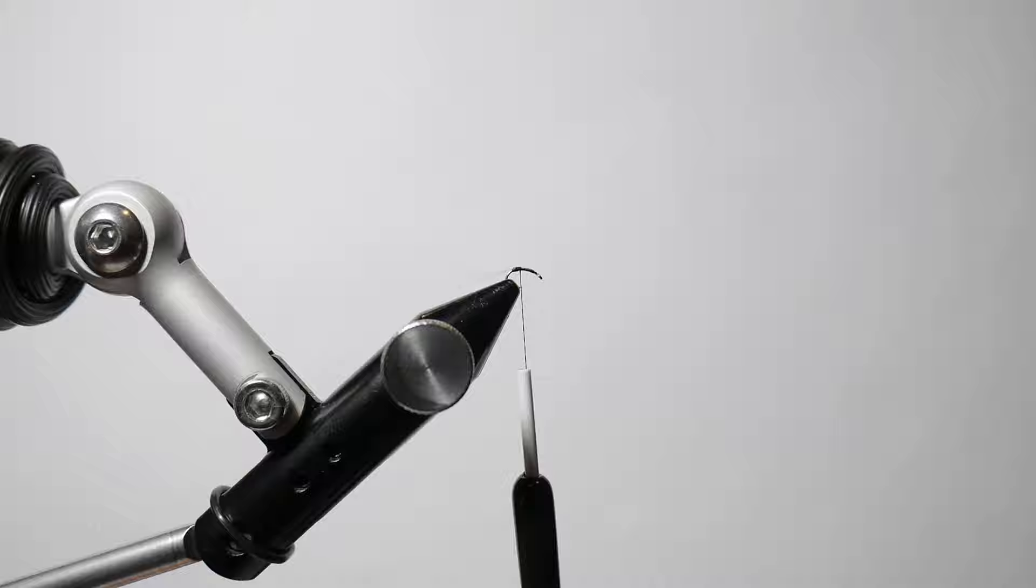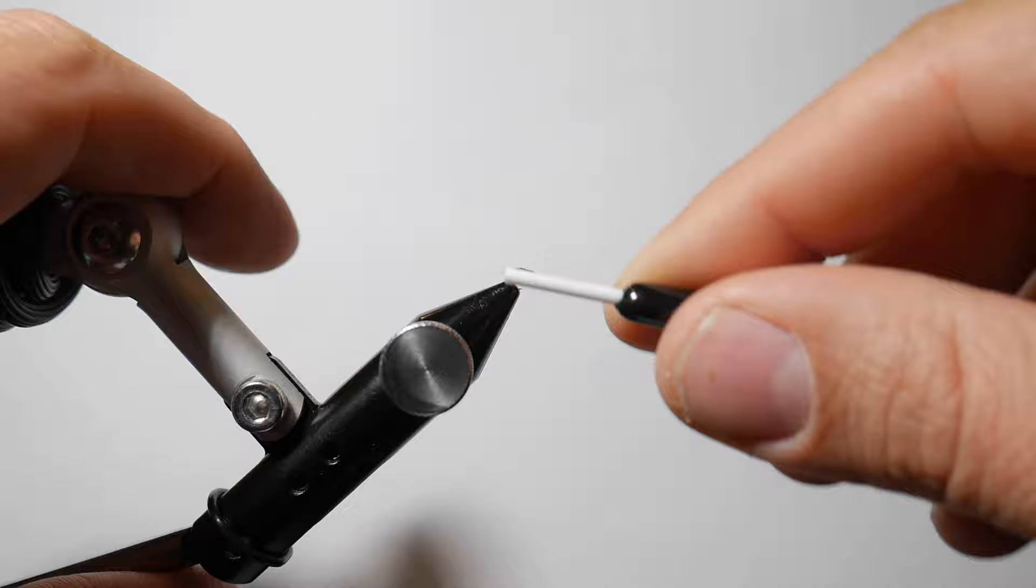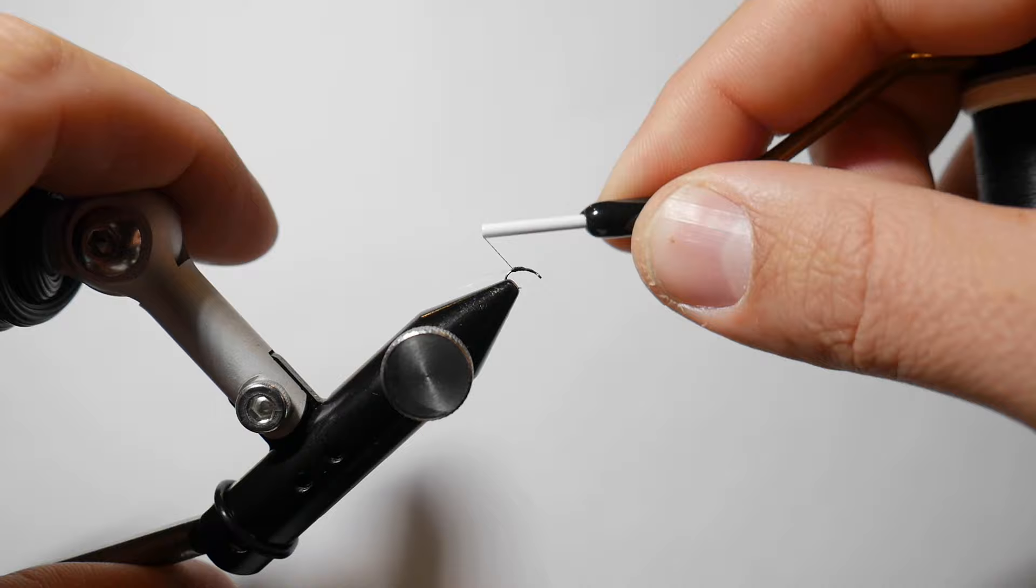And then we are going to just cover up those butts and then work our way right back down the fly. I don't want to bulk up this fly too much. We want to keep them pretty skinny.